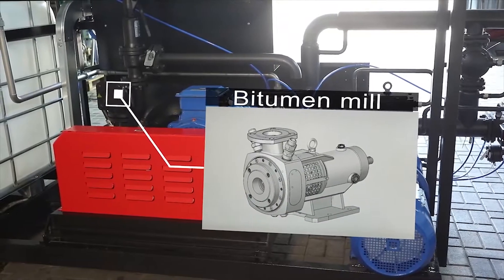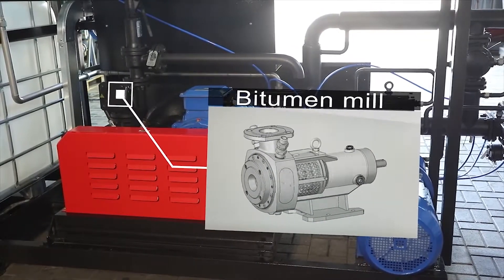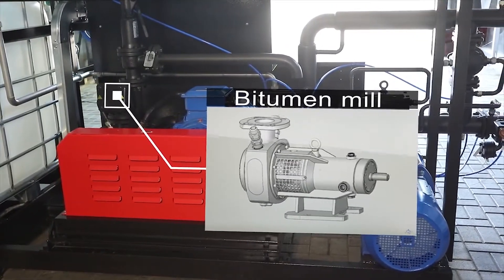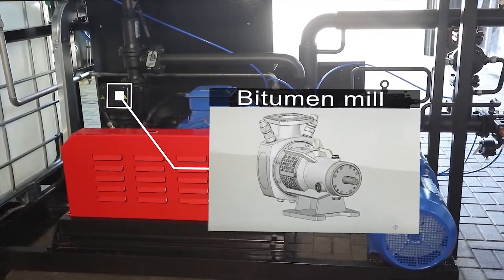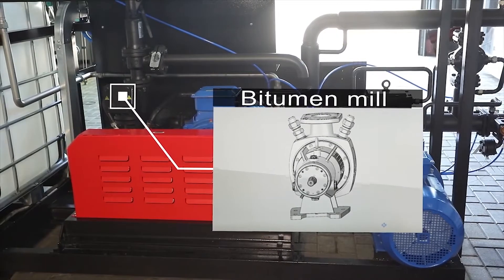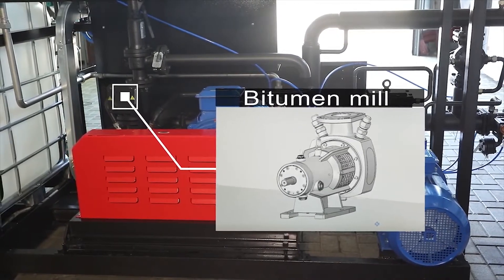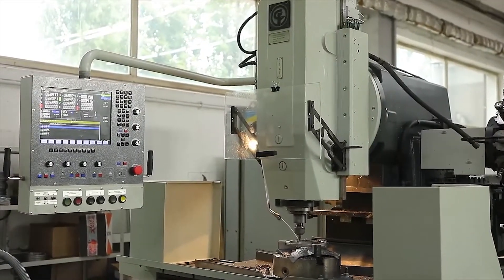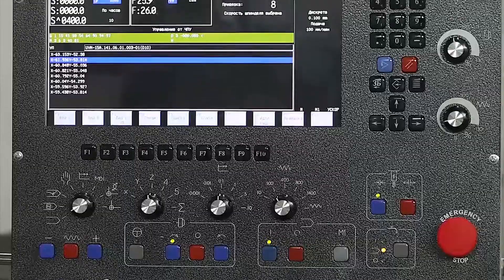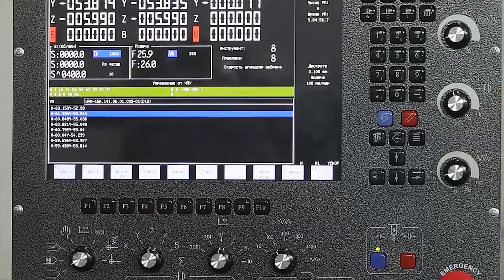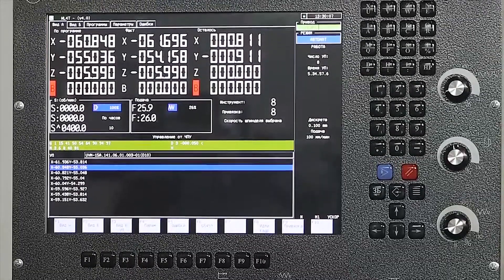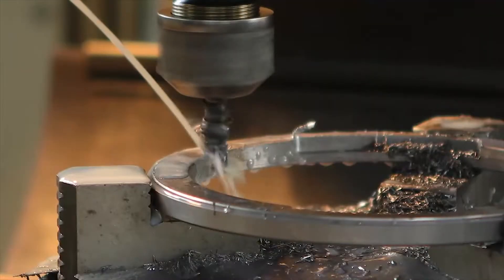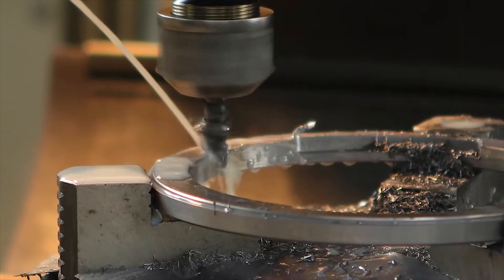The mill has been developed by the GlobeCore engineering department specifically for the production of bitumen emulsions. In the manufacture of its tools, we use high-precision, digitally controlled machines, which make it possible to reduce the gap between the knives, and make slow breakdown emulsions with bitumen particle size below 1 micron.